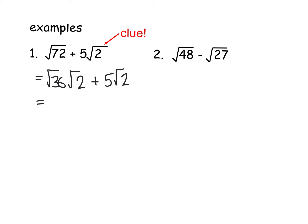Now that then just gives me 6√2 because the √36 is 6 plus 5√2. And they are both now in the form of surds with a √2 in it. We can add the numbers in front. 6 add 5 is 11√2. And that is our final answer here.